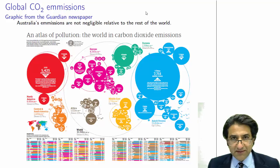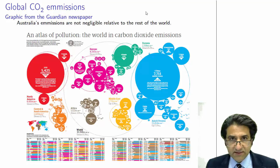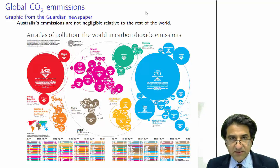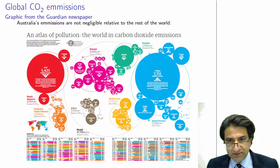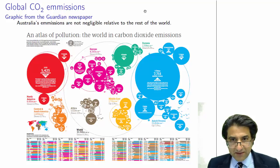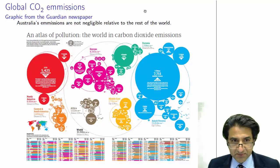Here's a graphic I found from the Guardian newspaper last year — it's an atlas of world pollution and carbon dioxide emissions. Essentially it's a bubble graph, where the radius of the bubble is proportional to the country's emissions. So what do we notice first?